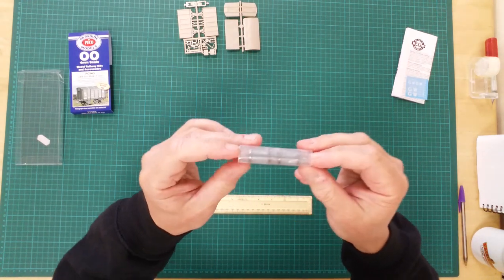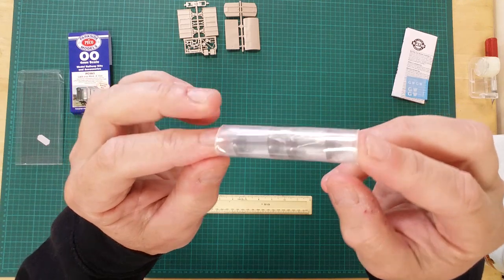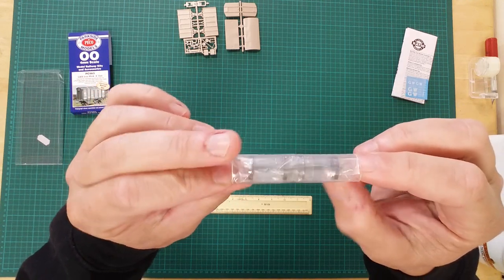This small packet contains two sets of metal wheels with their associated metal bearings.